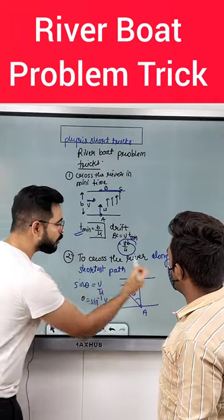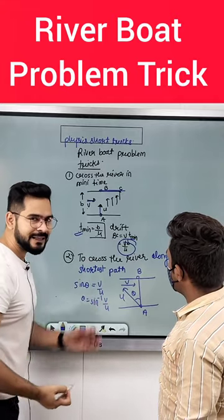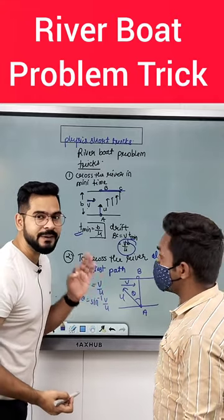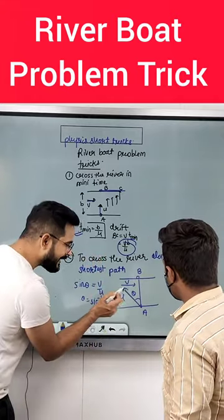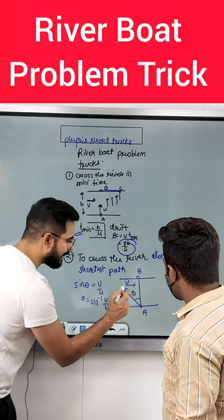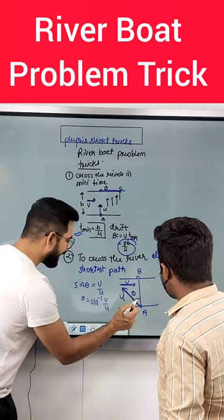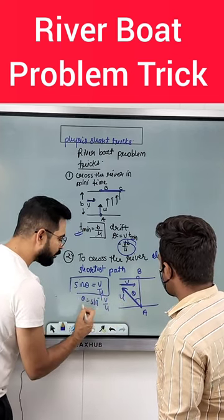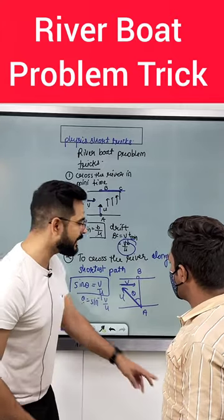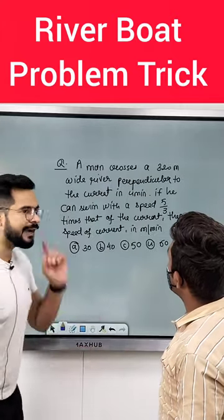How will it cross the river along the shortest path? That means, how will it cover the shortest path? In this case, it should be at angle theta. This is the water's velocity. The theta angle gives us: sin theta is equal to V divided by U. So theta tells you the direction — he must aim upstream at this angle to go in the perpendicular direction.